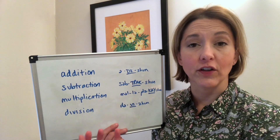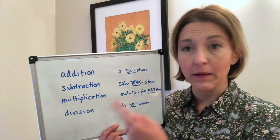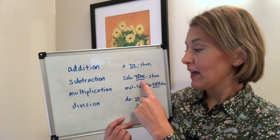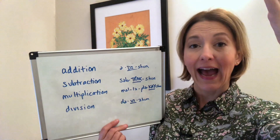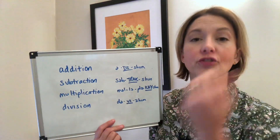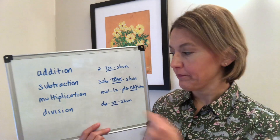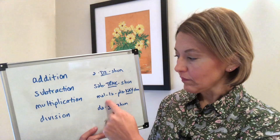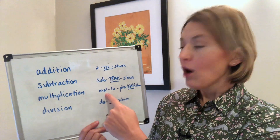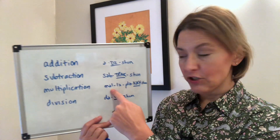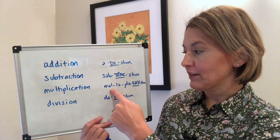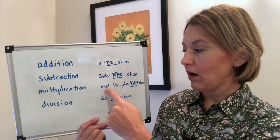Next we have 'subtraction.' Again, we're going to have that schwa sound in the first syllable — 'sub' — it's unstressed. Then 'track-shun': subtraction.